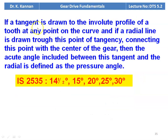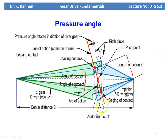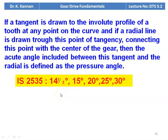If a tangent is drawn to the involute profile of a tooth at any point on the curve and a radial line is drawn through this point of tangency, connecting this point with the center of the gear, then the acute angle included between this tangent and the radial line is defined as the pressure angle. IS 2535 gives 14.5, 15, 20, 25, and 30 degree pressure angles for gear design. Normally we use 14.5 or 20 degree. The pressure angle will be specified in the problem; otherwise, we have to assume it suitably.